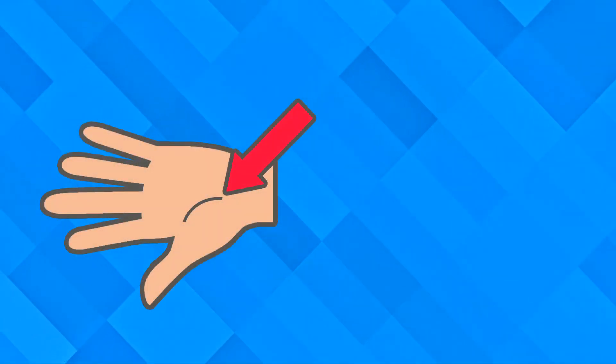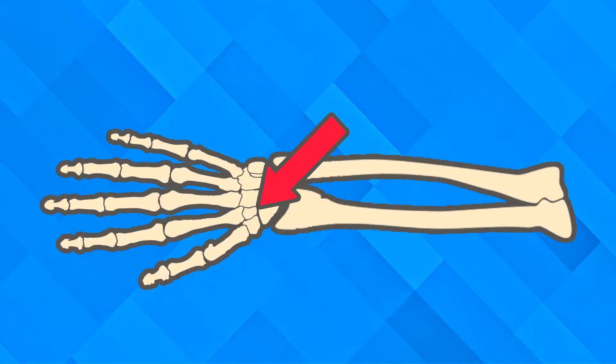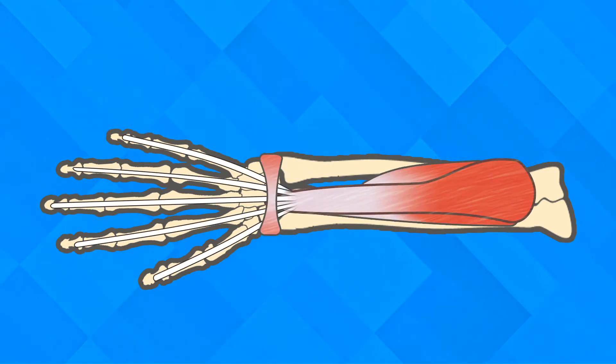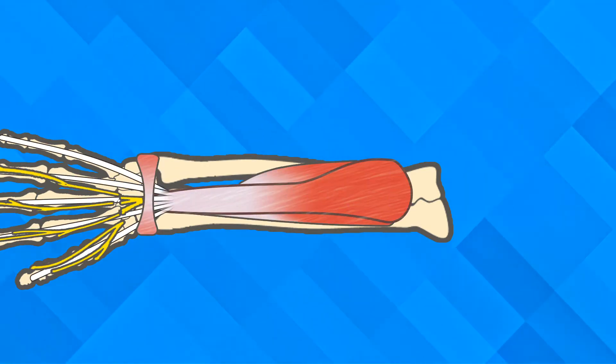The carpal tunnel is the name of a region on the front of your wrist. Passing through it are nine tendons which help to move your fingers and thumb, and an important nerve called the median nerve. Most of the time, the tendons and nerve live happily next to each other and get along well, but sometimes they become annoyed, usually because something is squashing in on them.